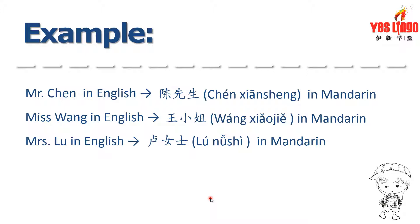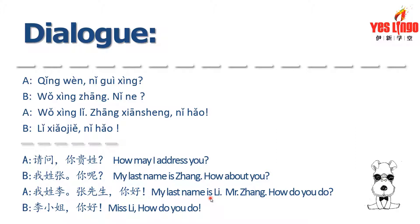Get it? Now it's time to put together everything we've learned in today's lesson so far. Let's take a look at the following dialogue between two people: 请问你贵姓。我姓张。你呢？我姓李。张先生，你好。李小姐，你好。